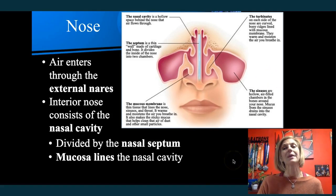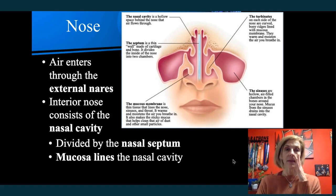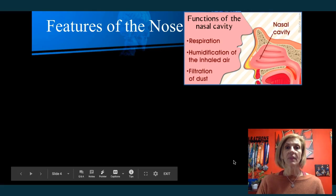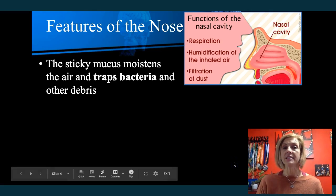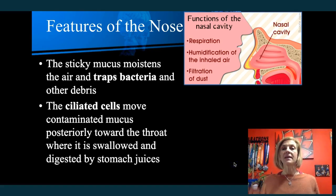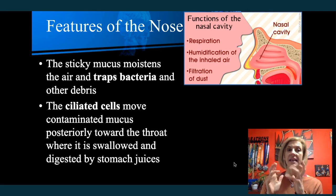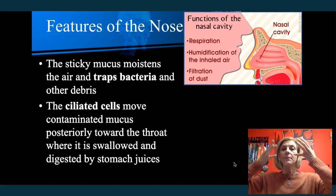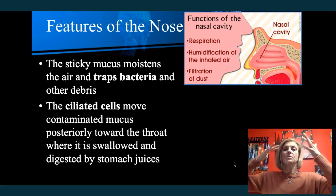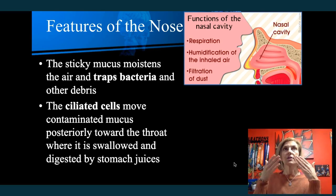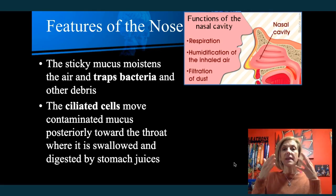Unfortunately, having vessels close to the surface makes noses bleed rather easily, especially during the winter. Those capillaries close to the surface dry out, crack, and create bleeding. The mucus is there to trap bacteria as well as other debris, and we're lined with ciliated cells. Cilia are like tiny hairs — they sweep things backwards, posteriorly, towards your throat. Dirt, bacteria, and other particles we don't want entering our lungs are captured in the mucus and swept backwards by the cilia.